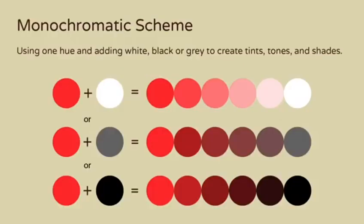A monochromatic color scheme is made up of one hue, plus either white, black, or gray. Here you have a variety of tints, tones, and shades of red.